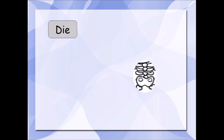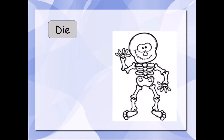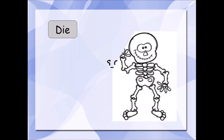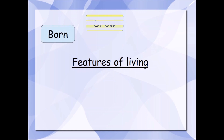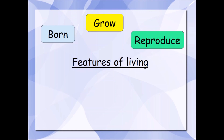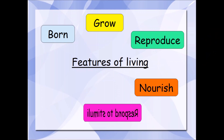And eventually we die. Every living thing at the end ends up dead. It is what it is. So, a sum up — features of living things: we are born, we grow, we reproduce and have new living things, we nourish — we need to eat, we respond to stimuli, and finally, we die.